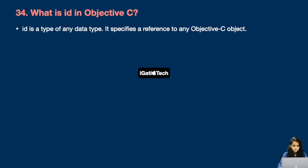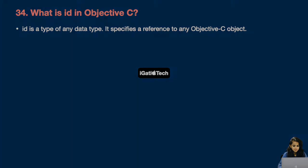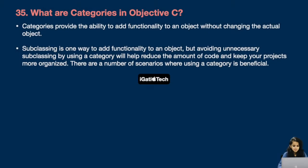Next question: what is id in Objective-C? id is a type that can represent any data type — it specifies a reference to any Objective-C object.